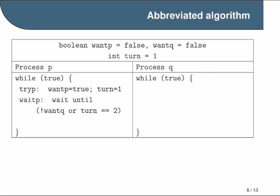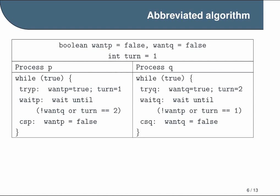And so in our WAITP state, our process is just waiting until its condition is true that allows it to enter the critical section. It's waiting for NOT WANTQ to be TRUE or TURN to equal 2, meaning it's process P's turn. Finally, we have CSP. That's where process P is in the critical section. And once that's finished, it's going to set WANTP to FALSE. And then again, by a very similar process, we do the same thing for Q. We define states TRYQ, WAITQ, and CSQ, which are all analogous to the TRYP, WAITP, and CSP that we just went through.